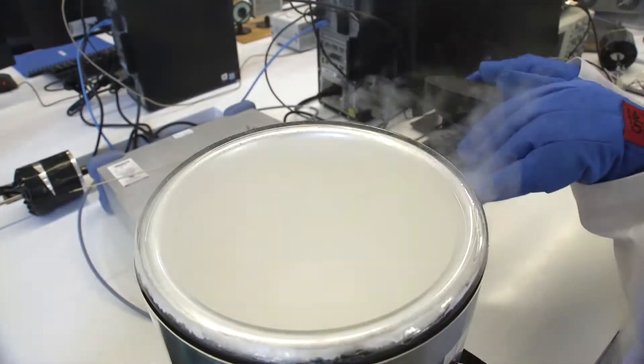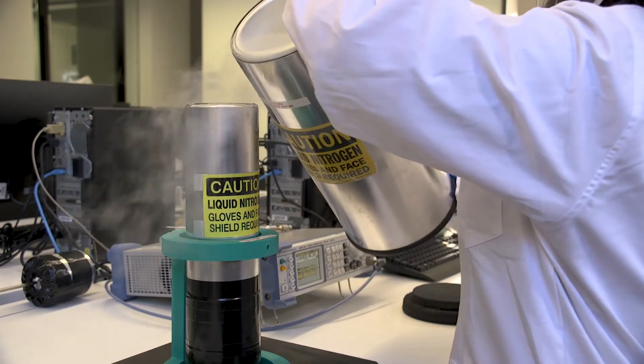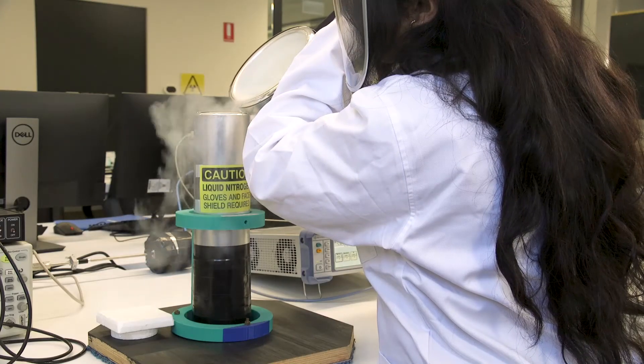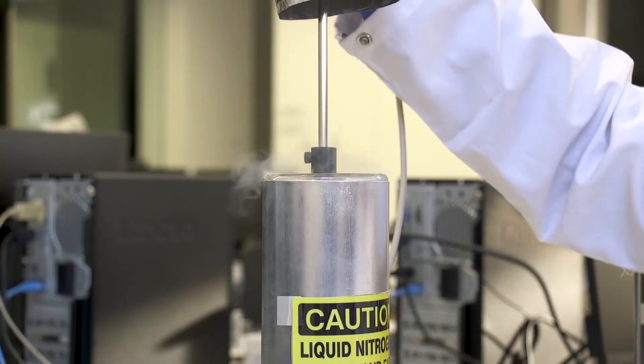In this experiment you get to handle liquid nitrogen to cool the superconductor below minus 183 degrees Celsius. You then use an oscilloscope to observe the superconductor conducting with zero resistance.